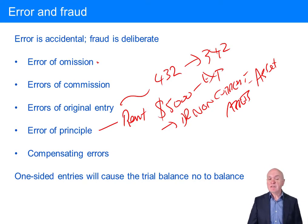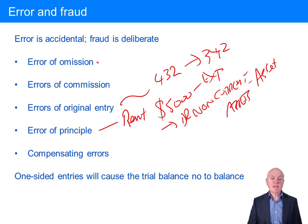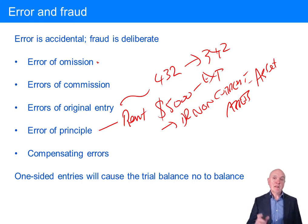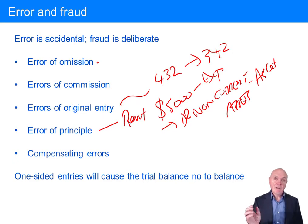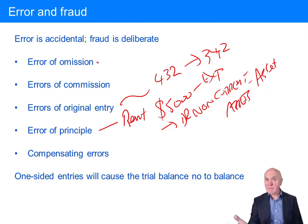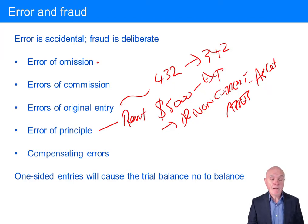An error of commission might cause an imbalance — it depends on the commission. If it's debit 100 but credit 200, that will cause the trial balance not to balance. But if an invoice goes around the system twice and you debit purchases, credit payables 100, and then again debit purchases, credit payables 100, that will not cause a trial balance to be out of balance.